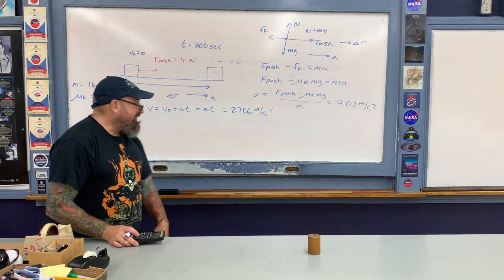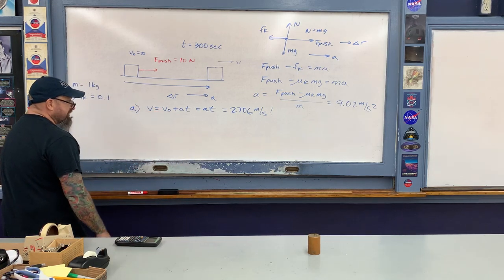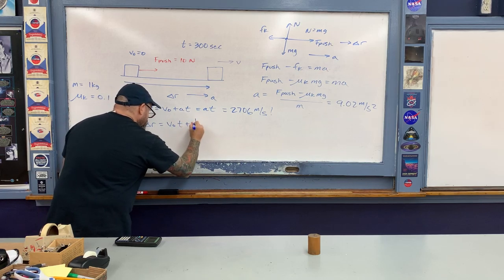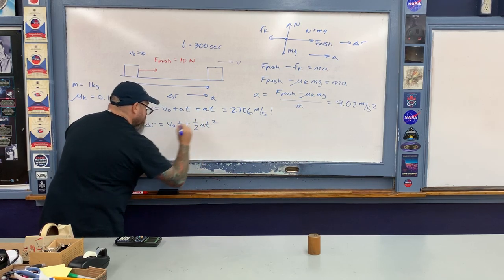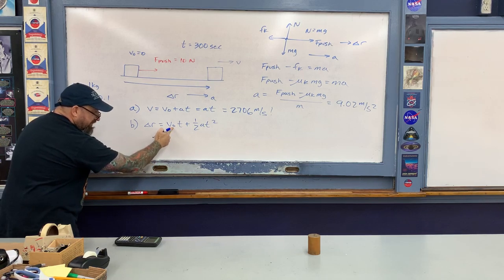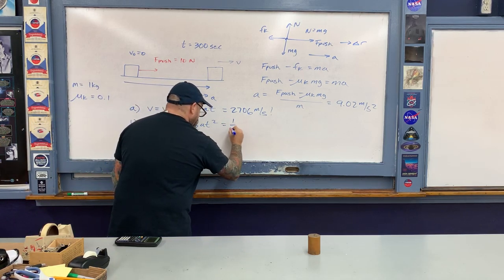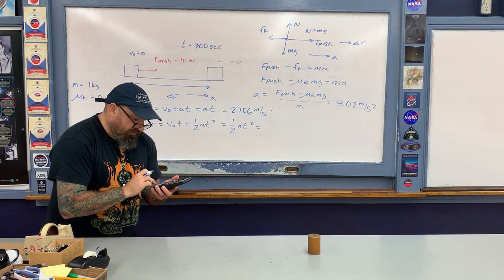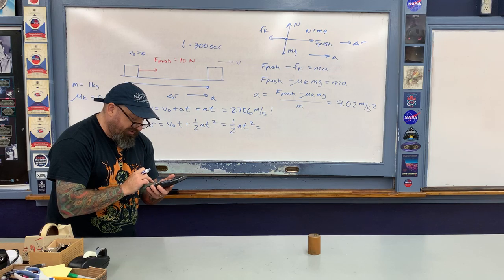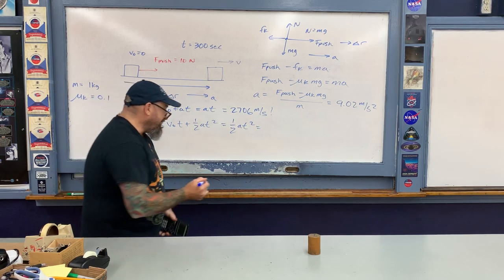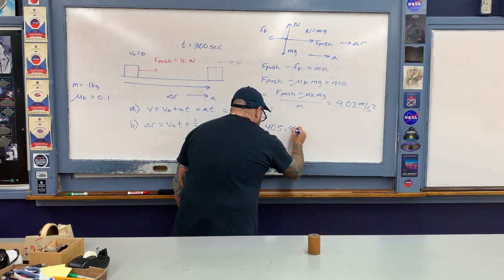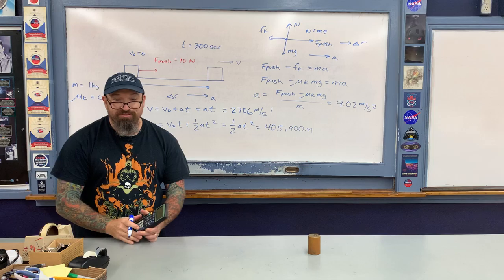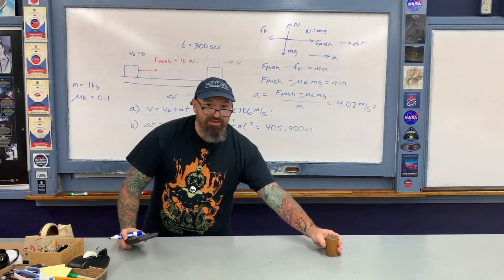Now let's calculate the displacement — the distance over which the object moves. Using the constant-acceleration position equation, and since the object starts at rest, displacement = ½at². Plugging in: ½ × 9.02 × 300² gives approximately 405,900 meters — about 406 kilometers, which is a couple of hundred miles.